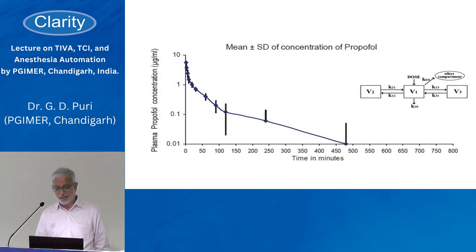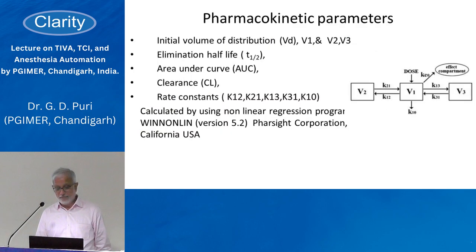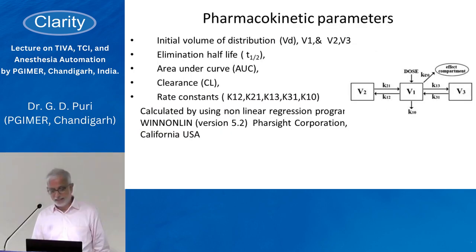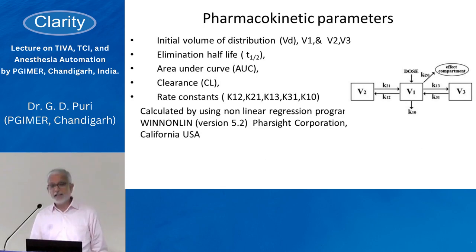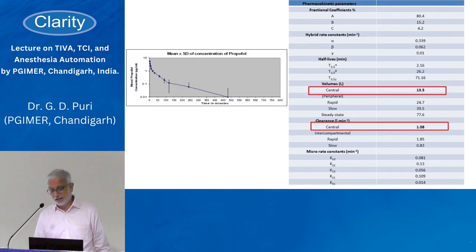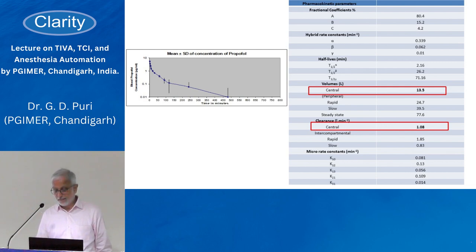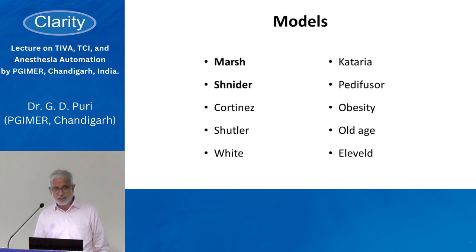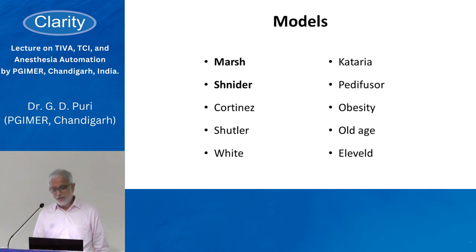After applying mathematical calculations, we found the central volume of distribution in our patients was approximately 13.5 liters, which was directly related to patient weight. The clearance was about 1 liter per minute. Several models were available at that time, the most common being Marsh and Schneider, and we wanted to verify whether those models were applicable in our population.